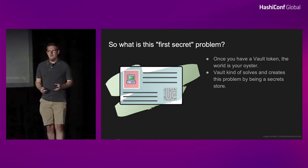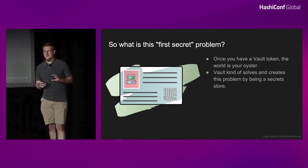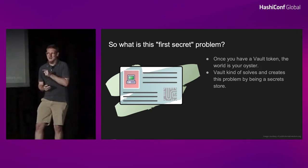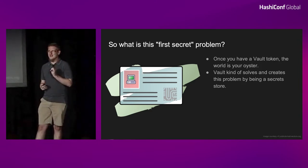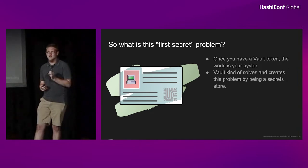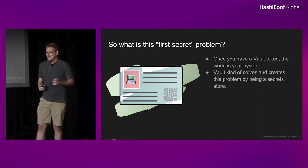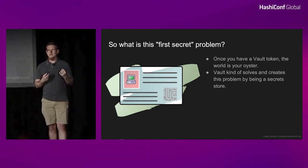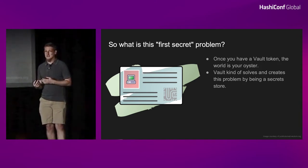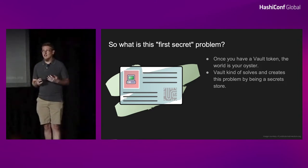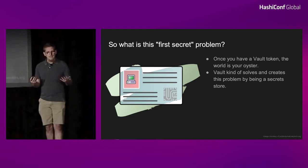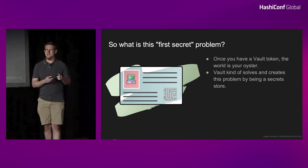Let's talk about the first secret problem. This is a problem that Vault both creates and solves, creating a circular dependency in your infrastructure — which is bad, especially when you need to re-bootstrap during an outage. The first secret problem means you need some piece of authenticating information on the machine to authenticate to Vault. Once you have a Vault token you can exchange it for other credentials and dynamic secrets, but you need that token first.